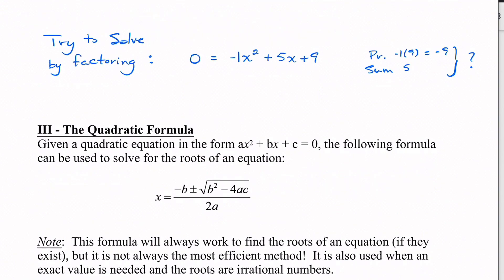But it doesn't mean there's not a solution. If I were to graph this and look at it on my calculator, it's going to look something like this — we've got our x-axis, our y-axis, and the graph looks something like a parabola. I can see there's an x-intercept there and an x-intercept there, so there are roots, but we can't find them using factoring. Hence why we have to use this new method — that's where the quadratic formula comes in.